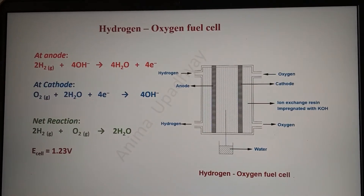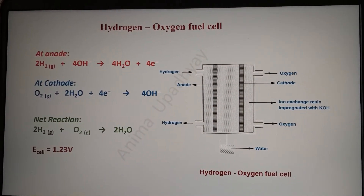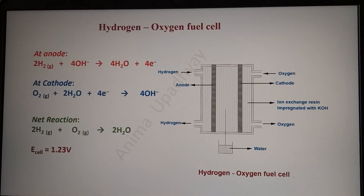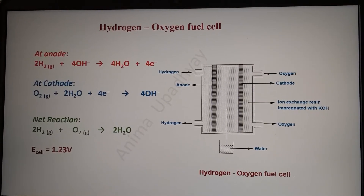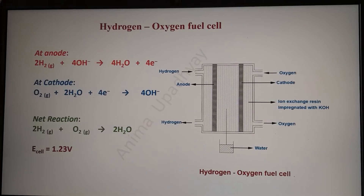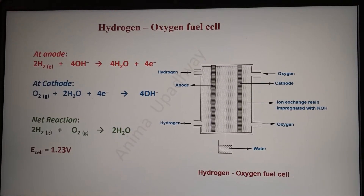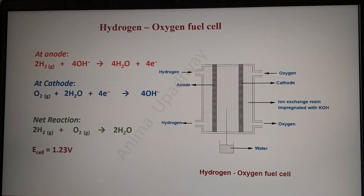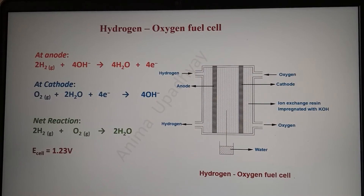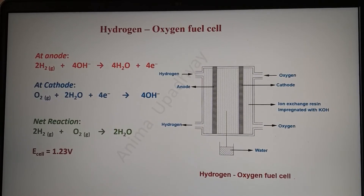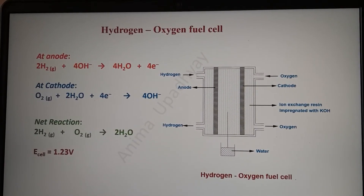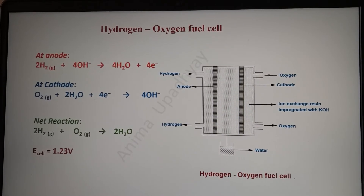You can see that there is a small container containing water, through which a wick rises up into the ion exchange resin. This wick actually maintains the balance of water in the electrolyte.